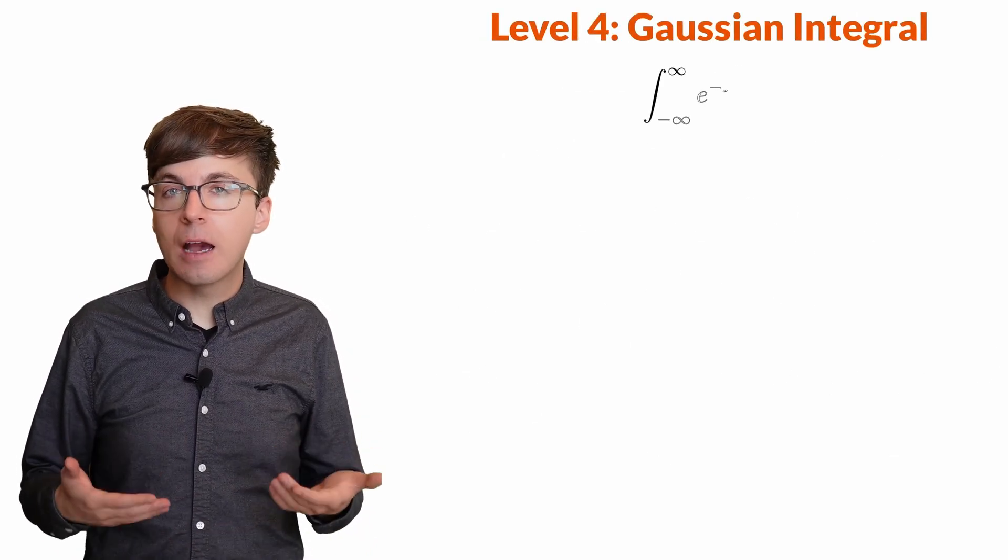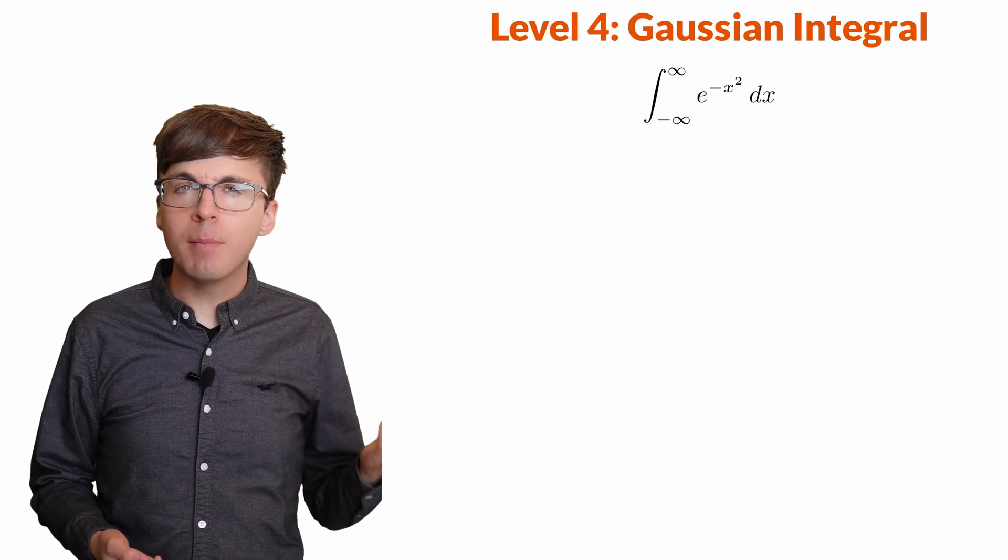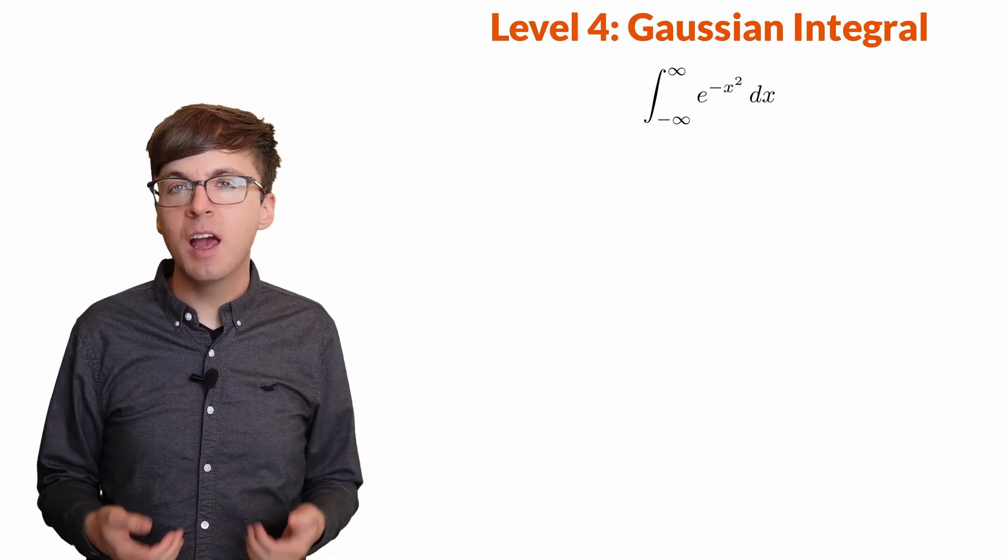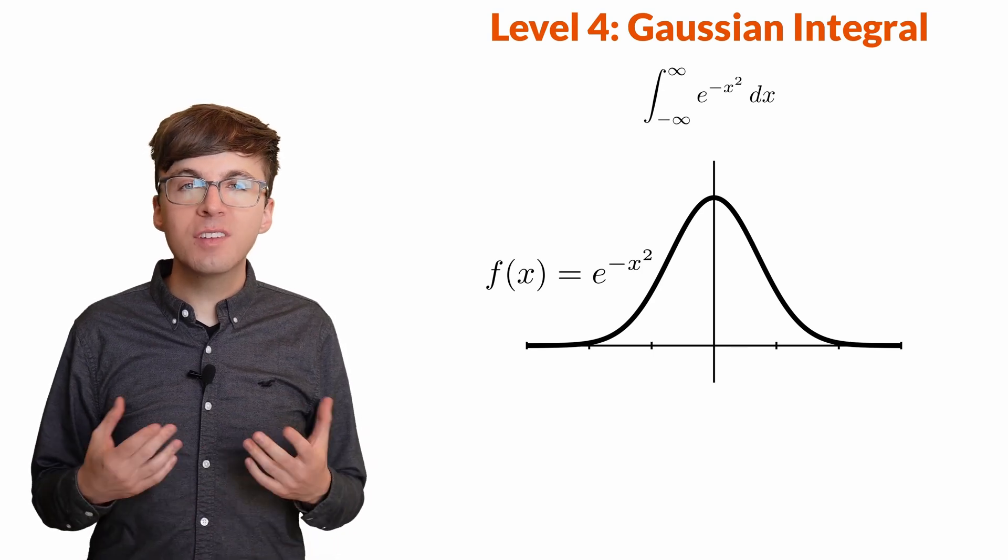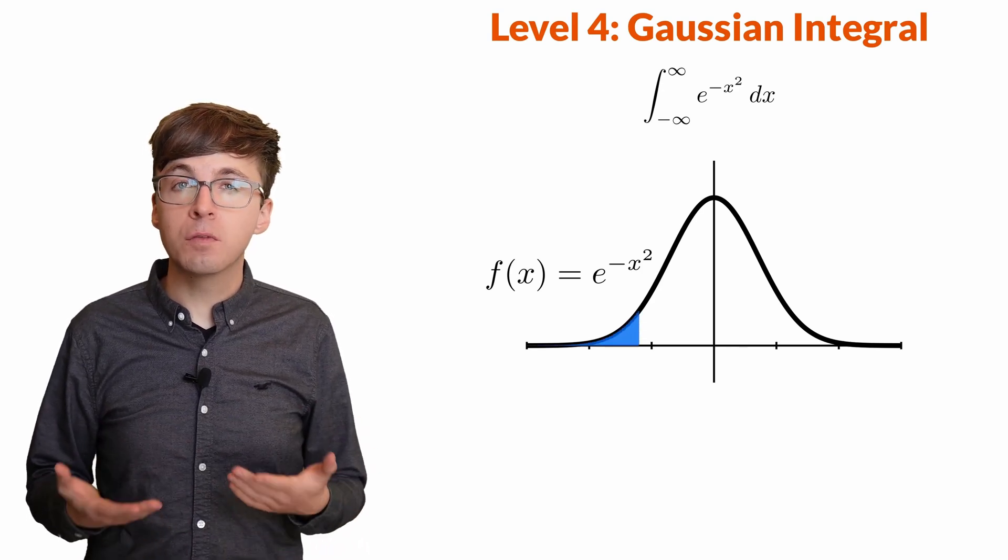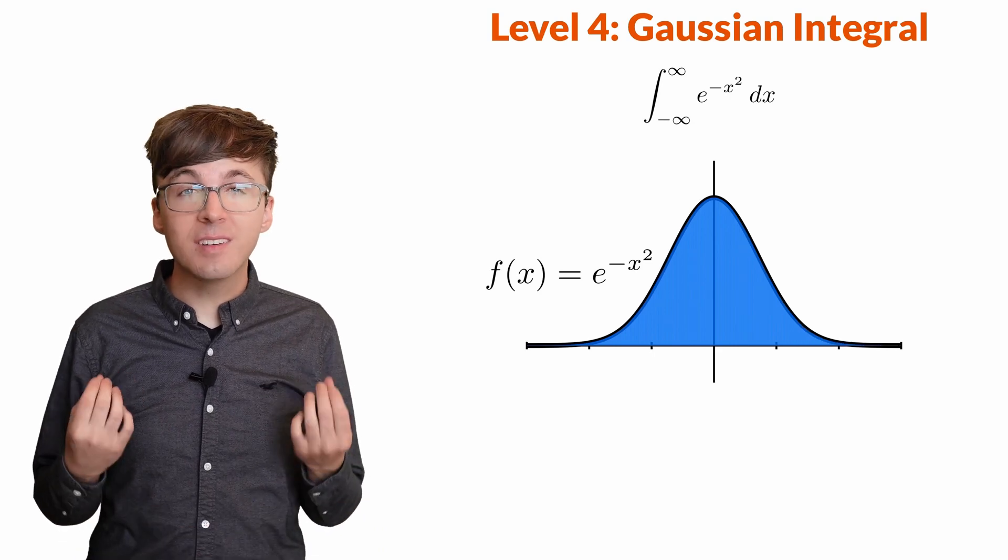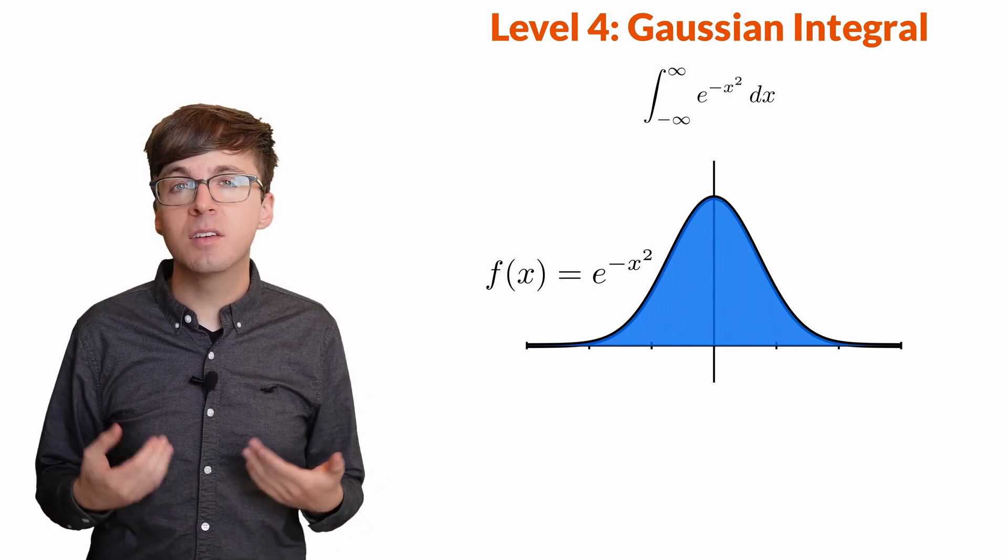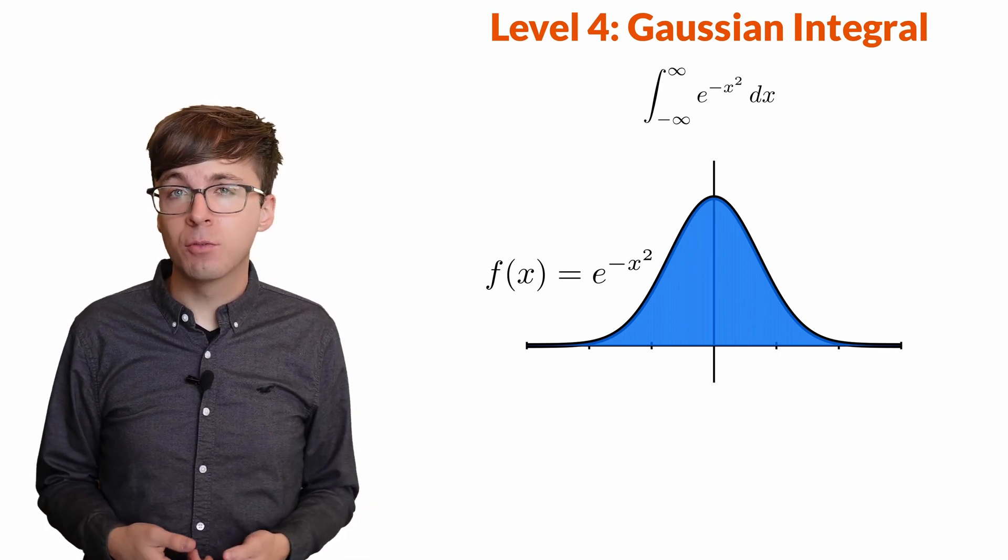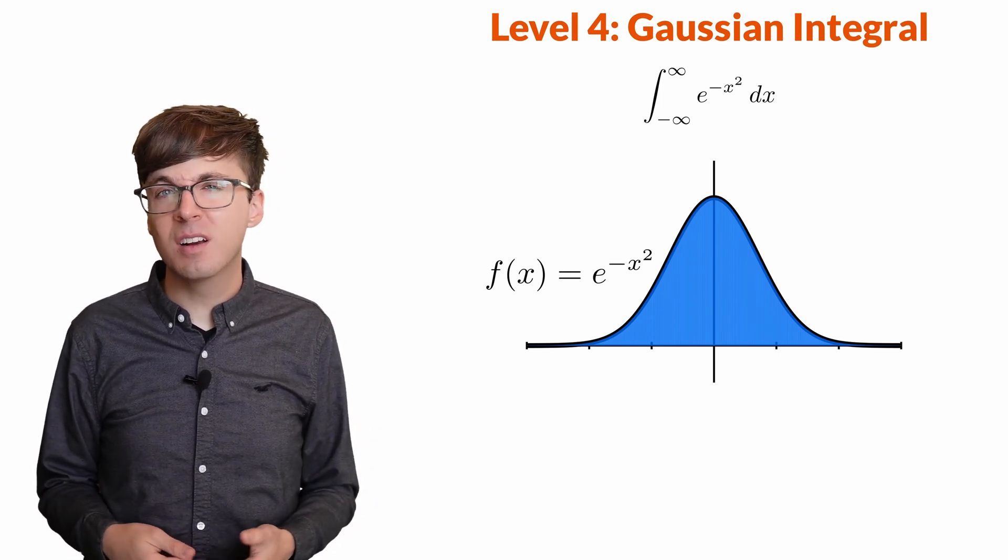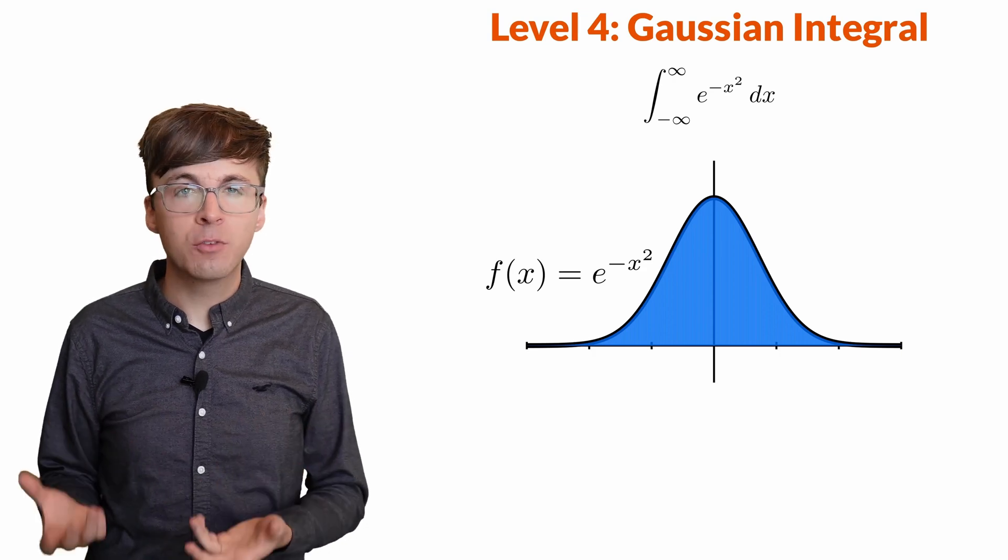For level 4, let's see how pi appears in the Gaussian integral, the integral from minus infinity to plus infinity of e^(-x²) dx. Our goal is to find the area underneath this curve over the whole real line. This integral is essential for probability, statistics, quantum mechanics, and more.